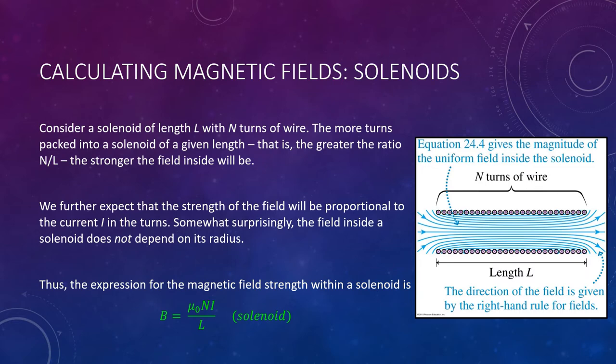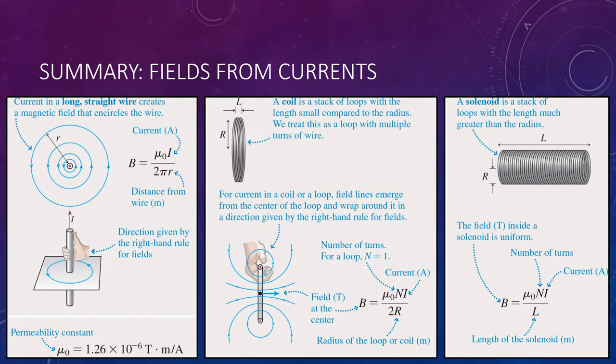The next slide summarizes all three equations together: a straight wire on the left, a coil or loop in the middle, and a solenoid on the right. It breaks down each equation into parts and reiterates that the right-hand rule applies to all three devices to find either the current direction or the magnetic field direction, as long as you know one of them.